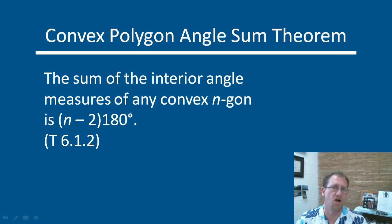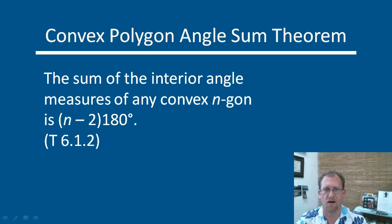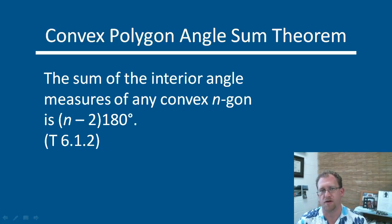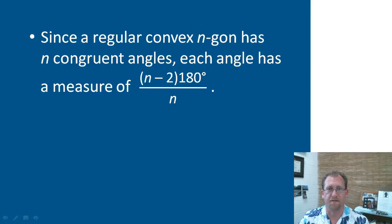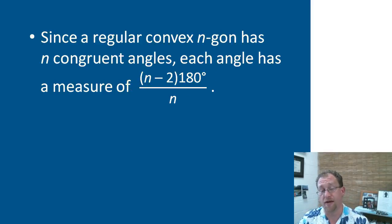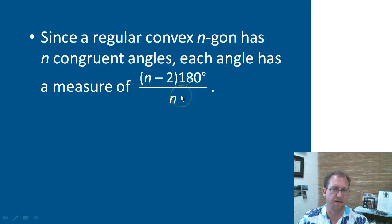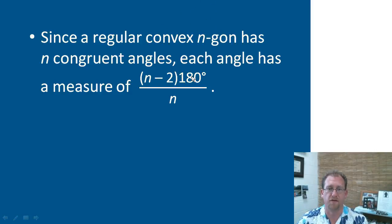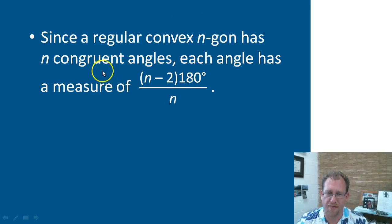This leads us to the convex polygon angle sum theorem: the sum of the interior angle measures of any convex n-gon is (n − 2) × 180 degrees. If you know the number of sides of a convex polygon, you can find its total interior angle measure. A corollary: if the polygon is regular — meaning all angles are the same measure — you can divide the total by the number of angles to get the measure of each individual angle. For a regular pentagon: (5 − 2) × 180 = 540 degrees total, and 540 ÷ 5 = 108 degrees per angle.